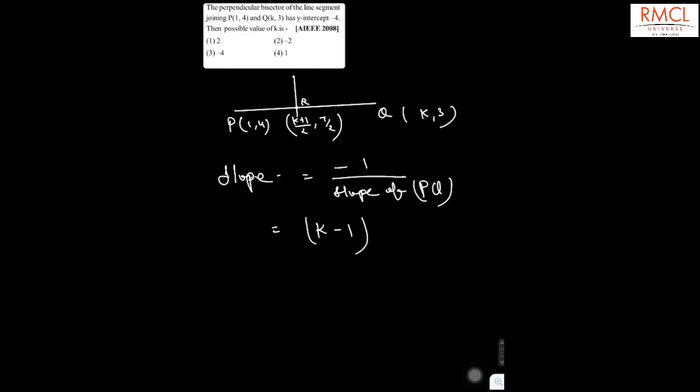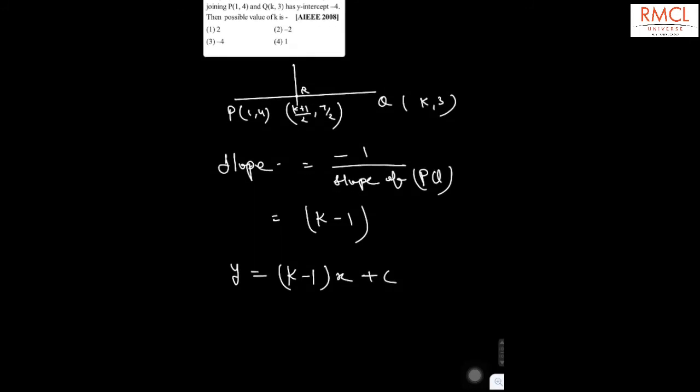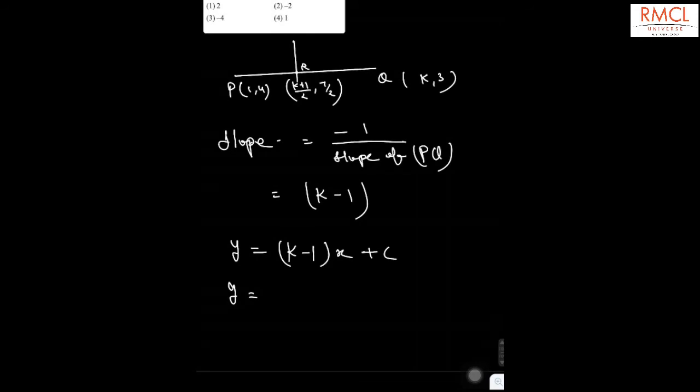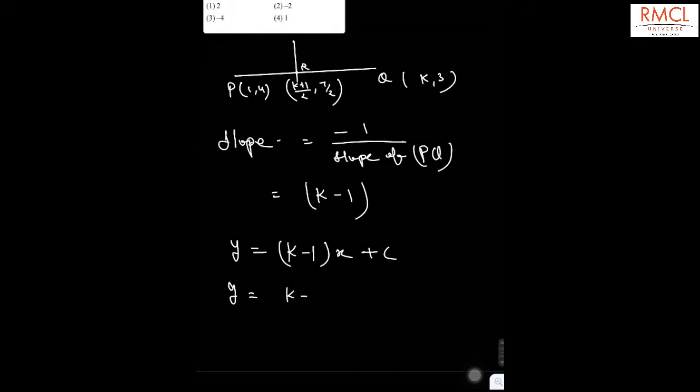So k minus 1 is the slope of the perpendicular bisector. We know that the equation of the line is given by y equals mx plus c, where m is k minus 1 multiplied by x plus c. It is given that the value of c is minus 4, therefore the line becomes y equals (k-1)x minus 4.